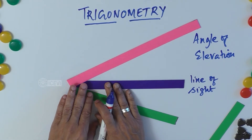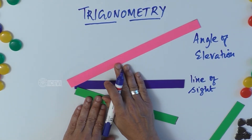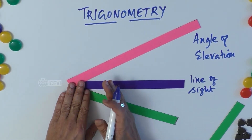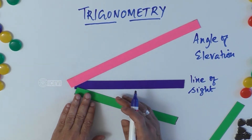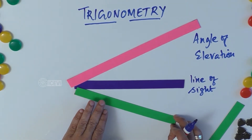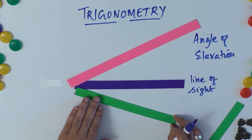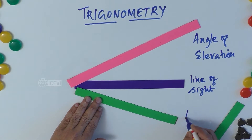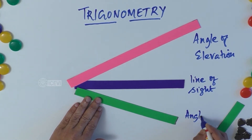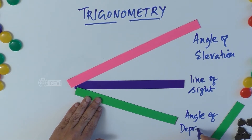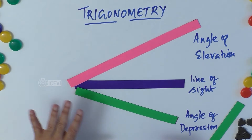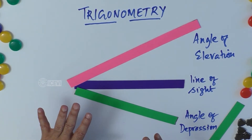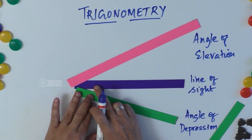The angle of elevation means our direction is elevated — we are looking up. When from our position we look down, there is an angle involved, and we call that the angle of depression.